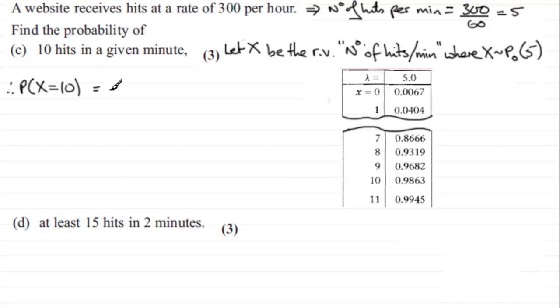So what we could do is using these tables, think of this as being the probability that X is less than or equal to 10, minus the probability that X is less than or equal to 9. This would leave us then with the probability X equals 10.